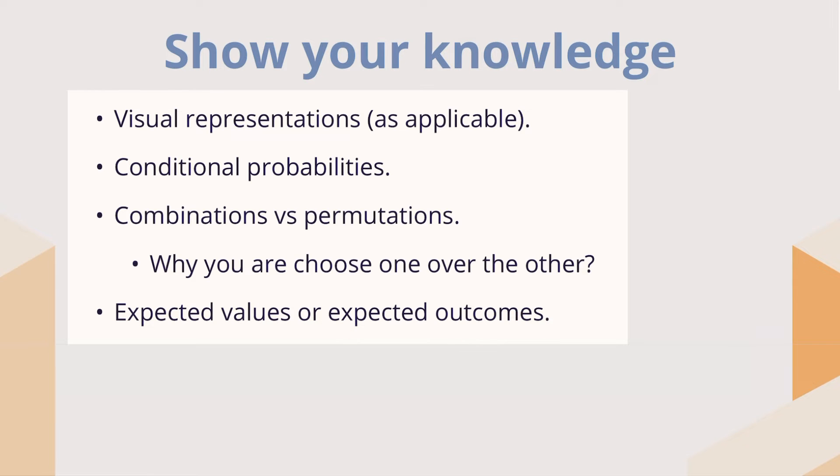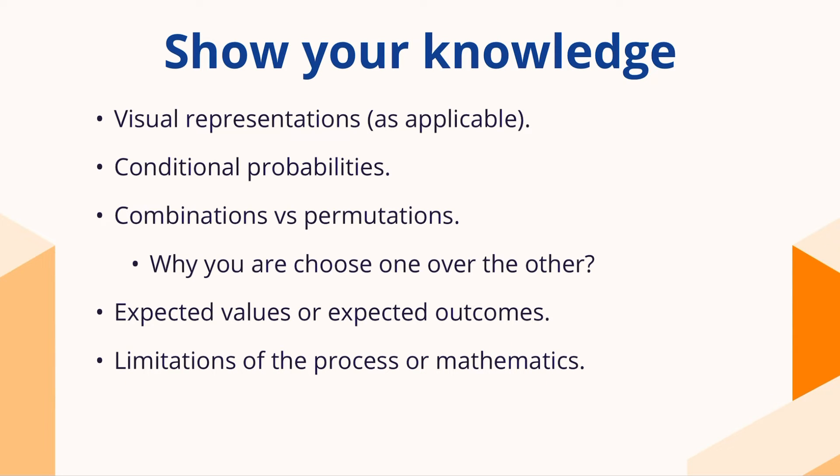Expected values or expected outcomes — this is where I would expect your IA to go. You should have something you're shooting towards; it shouldn't just be an analysis of what's the probability of this happening, because that's usually pretty straightforward. Find a way to apply probability and find that expected outcome, as covered in the curriculum. And of course, always discuss the limitations of the process or mathematics you're using. You may need to set aside a piece that further complicates your analysis, and that's okay — as long as you're being thorough in the mathematics you do include.